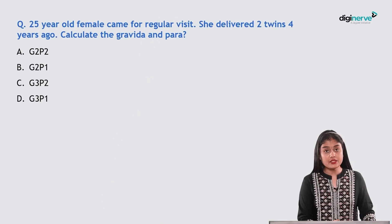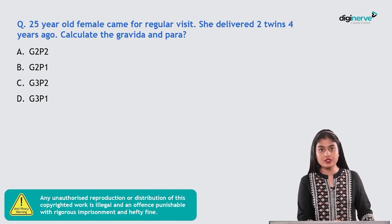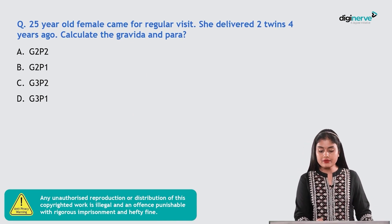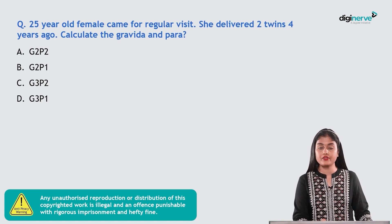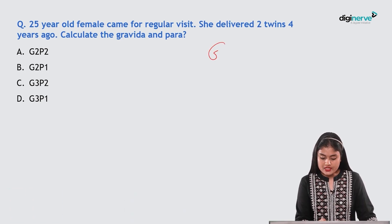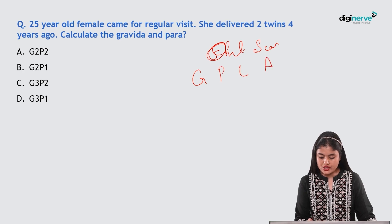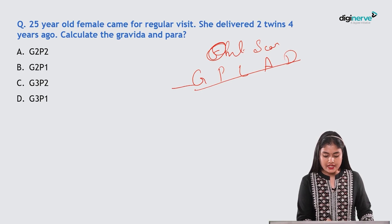Starting with the first question: a 25-year-old female came for a regular ANC visit. She delivered twins four years ago. Calculate her gravida and para. The obstetric score includes gravida, para, living, abortion, and death.